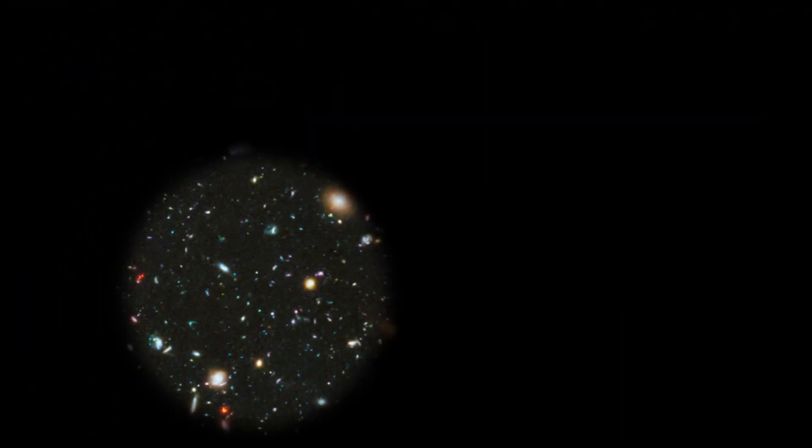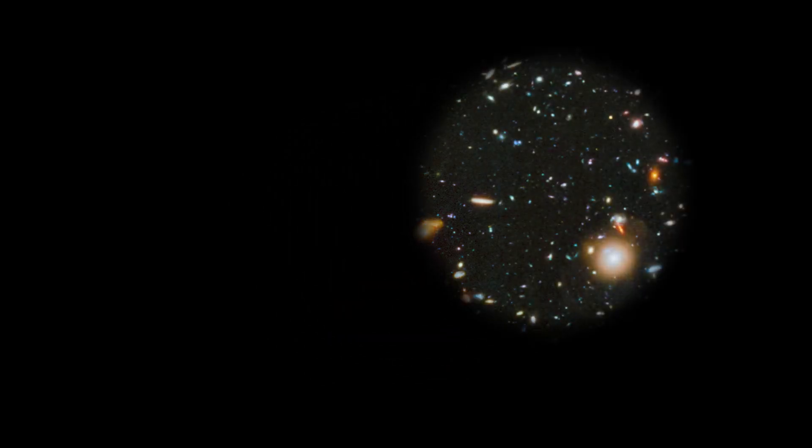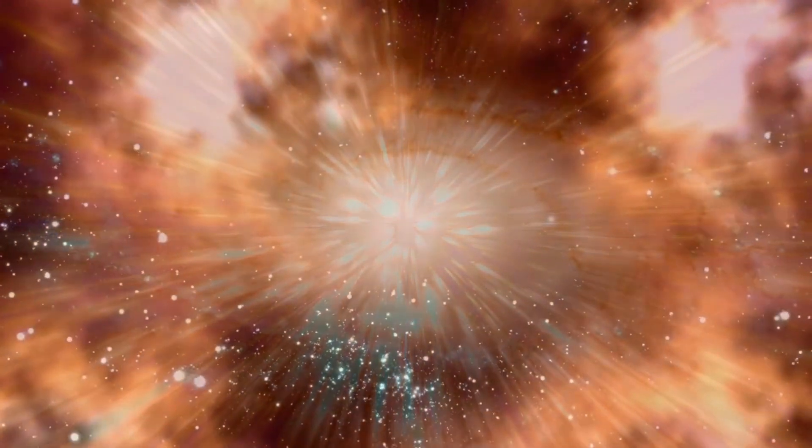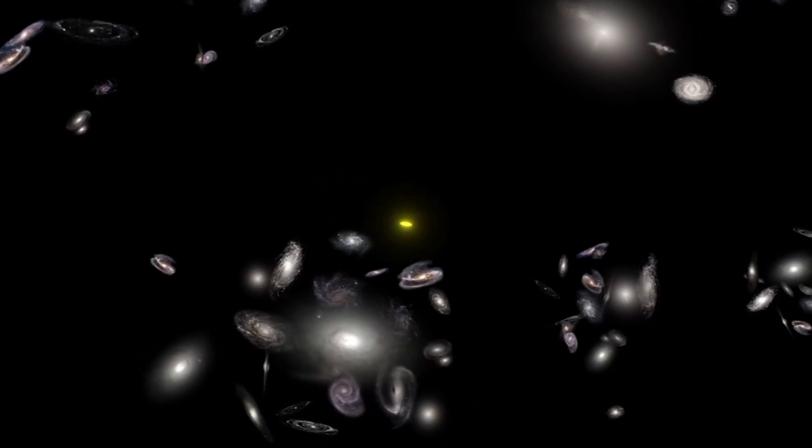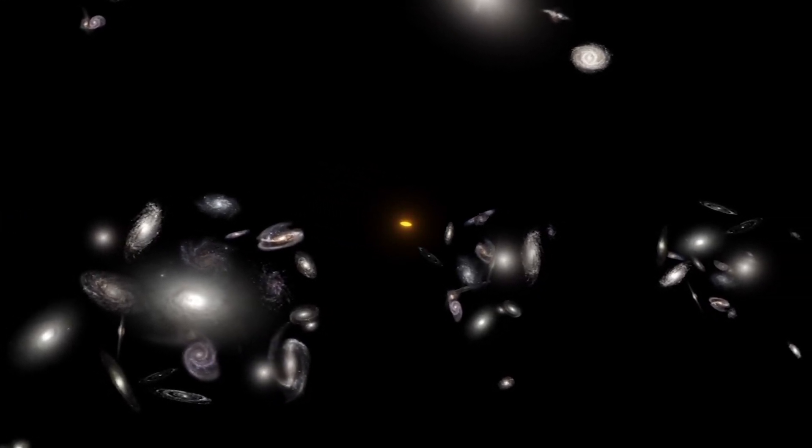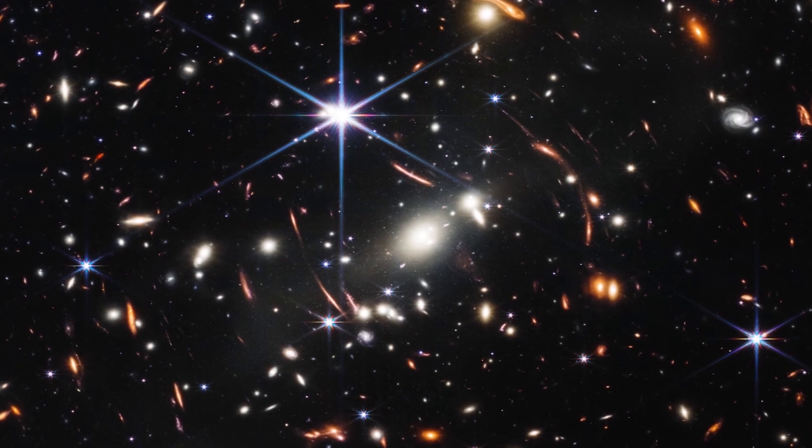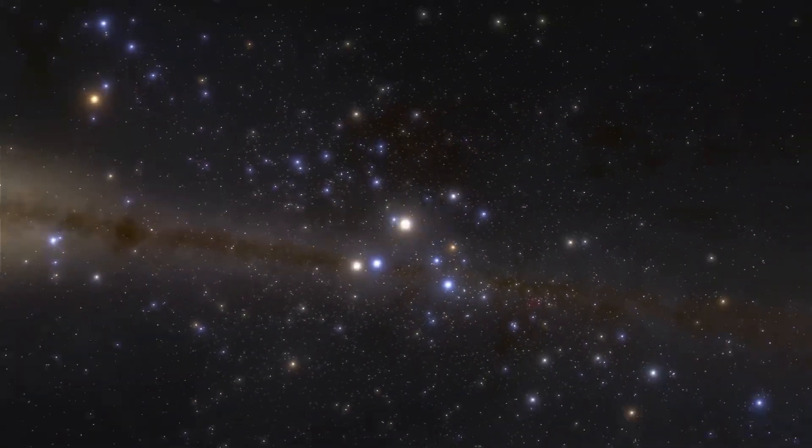The striking images captured by the James Webb Telescope have challenged our understanding of the origins of the universe. Specifically, these images directly contradict the Big Bang Hypothesis, which has long been considered an unquestioned truth by most cosmology theorists. The galaxies captured in these images appear to be too small, smooth, old, and numerous compared to the predictions of the Big Bang Hypothesis. The fact that the observed galaxies are two to three times smaller than similar galaxies imaged by the Hubble Space Telescope completely defies the expected behavior in an expanding universe.